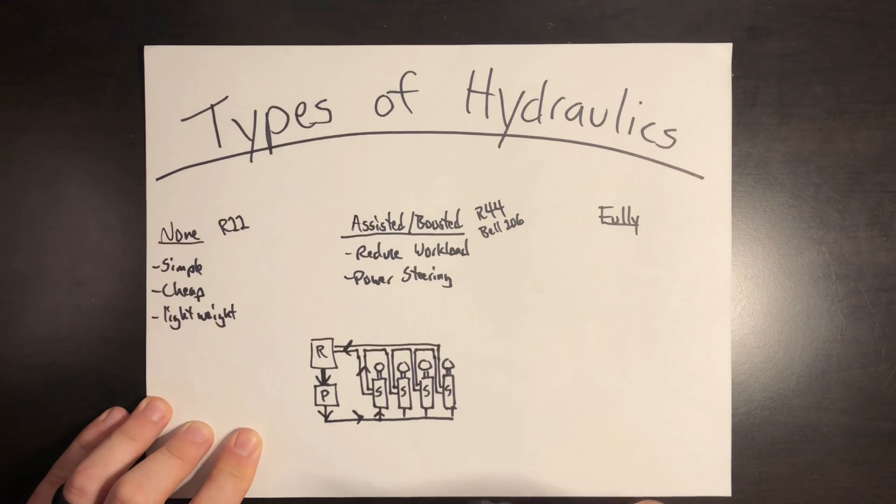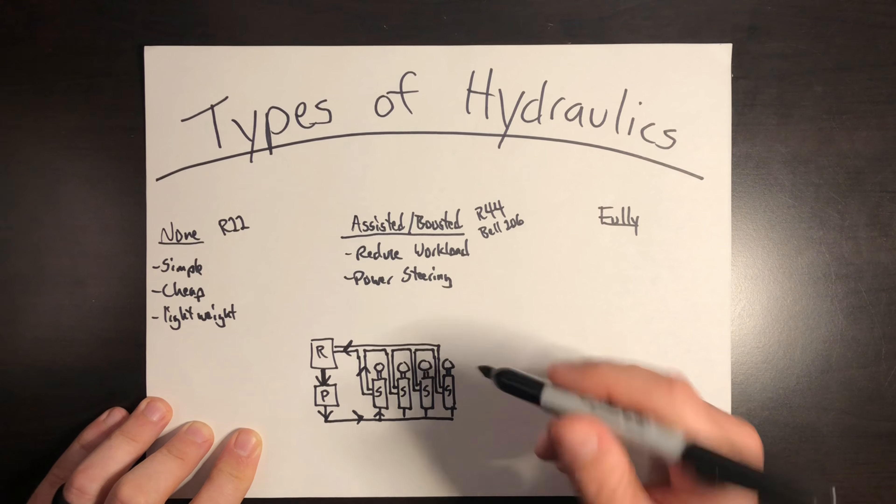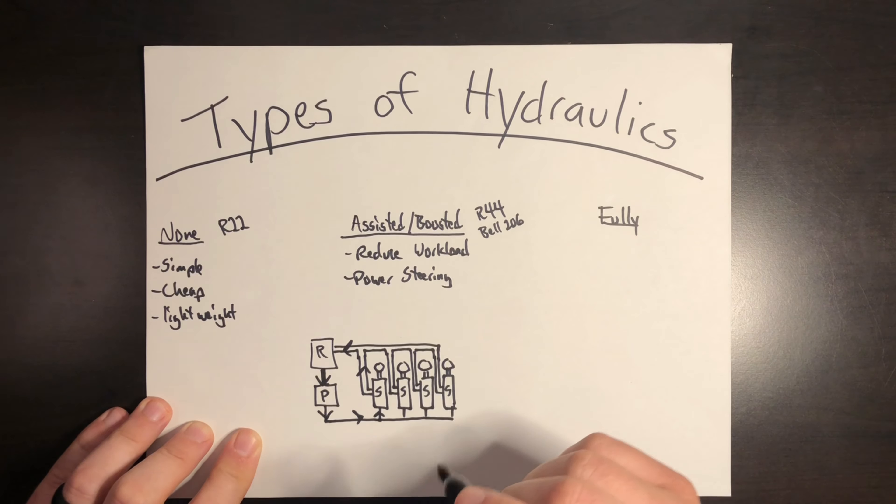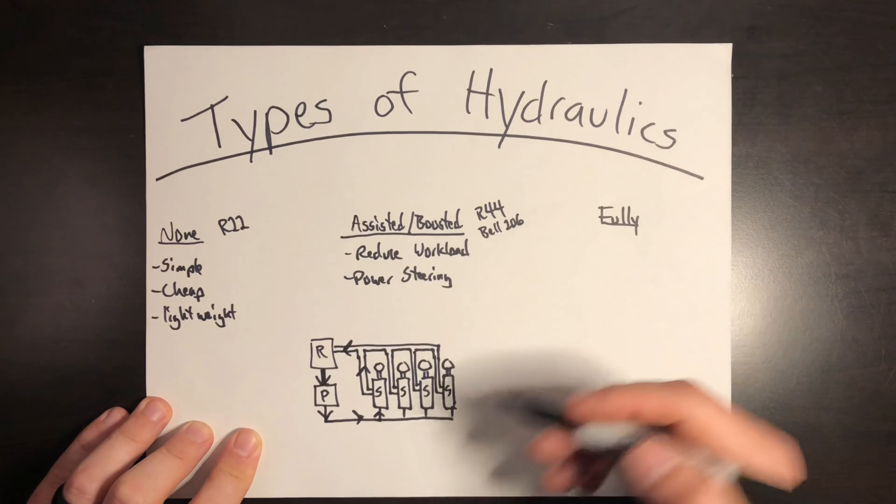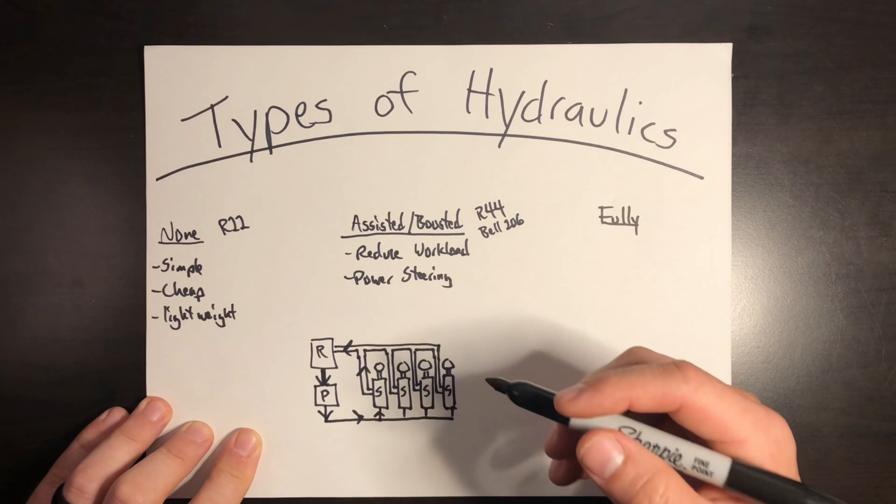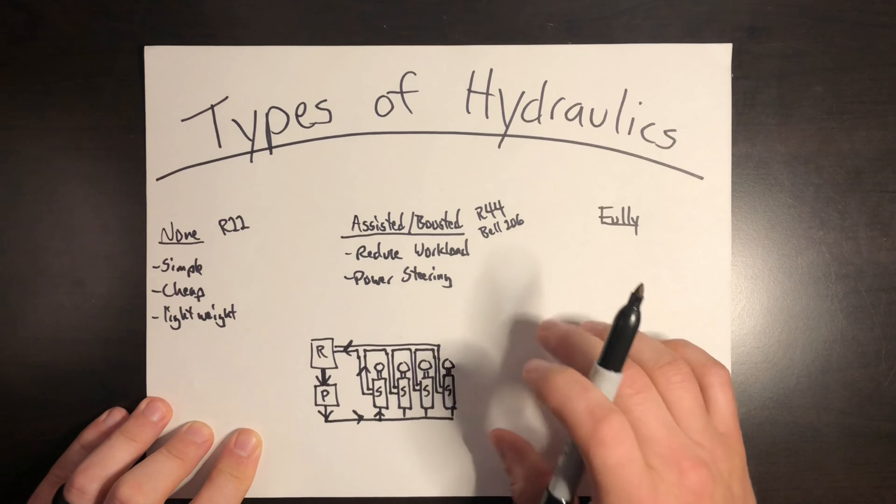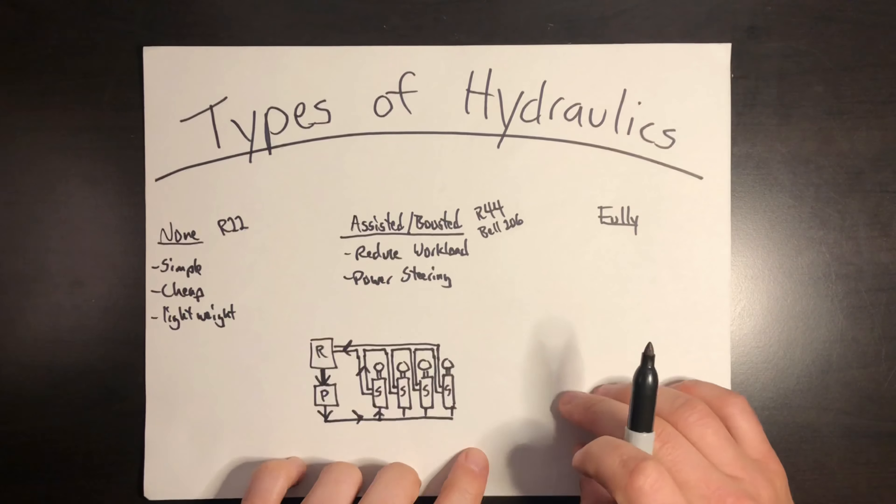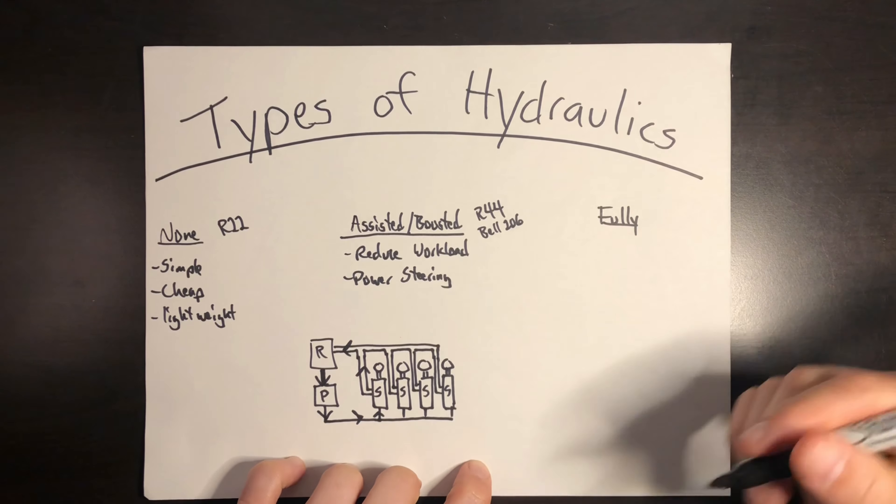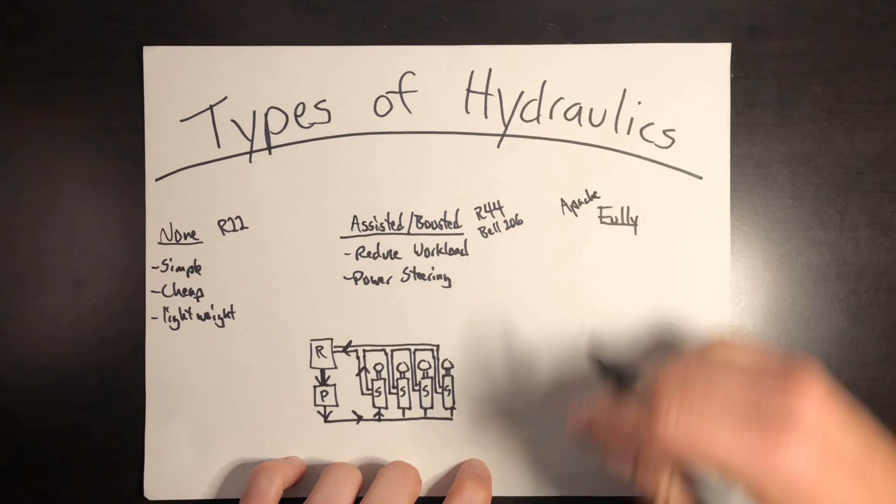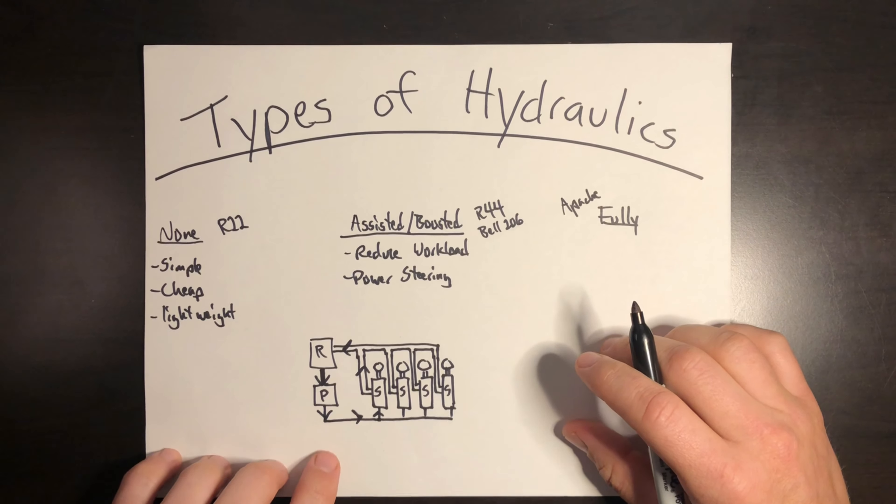So when you move a control, say a move forward cyclic, the system boosts the input that you're making, and it makes it easier to move that control. It reduces the force required to move the control, almost taking away all the force of the movement because hydraulics are pushing what you're already pushing. So with the hydraulic systems, they found that they needed to install some sort of artificial feel or a force trim into the system because they found that pilots tended to move the flight controls in some instances while being unaware that they're making any kind of inputs or movement into the controls because there was just no feedback in the controls. So what they did is they developed an artificial feel or a force trim to add some sort of resistance in the system so it did actually feel like you're moving the flight controls.